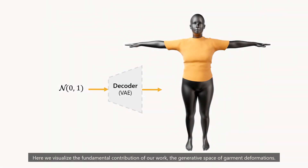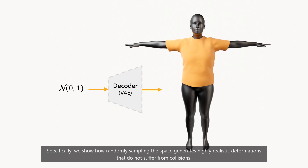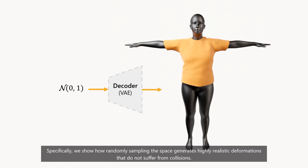Here we visualize the fundamental contribution of our work: the generative space of garment deformations. Specifically, we show how randomly sampling the space generates highly realistic deformations that do not suffer from collisions.